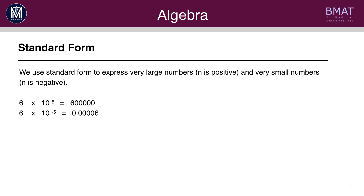We use standard form to express very large or very small numbers. Have a look at these two examples. 6 times 10 to the 5: we have to move the decimal place five times to the right. As you move to the right each time you create a zero, so we have five zeros after the 6, making 600,000. For 6 times 10 to the minus 5 we move to the left, giving four zeros before the 6 to form 0.00006.